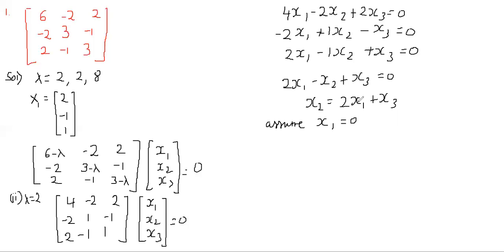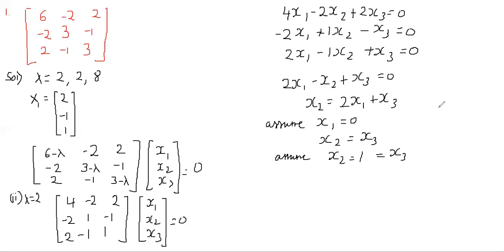If x1 = 0, the equation becomes x2 = x3. We can then assume x2 = 1, which also implies x3 = 1. So we get the second eigenvector: x1 = 0, x2 = 1, x3 = 1, giving the eigenvector [0, 1, 1].